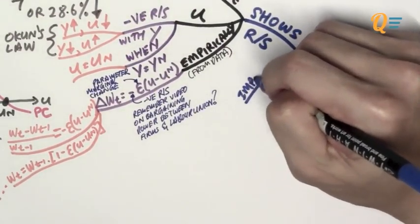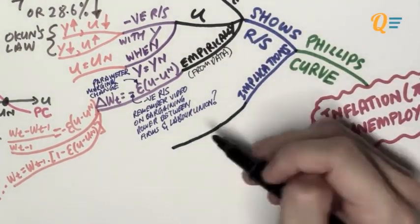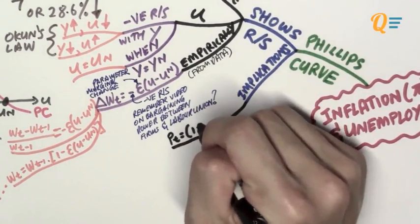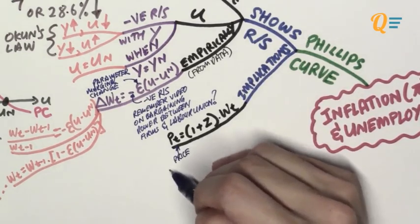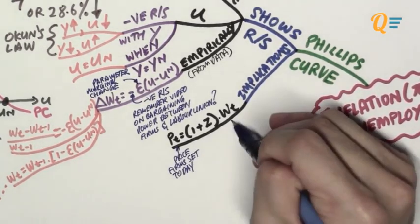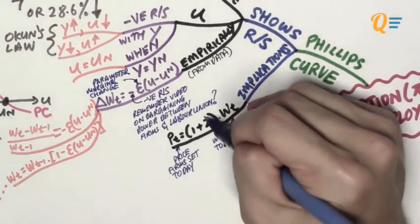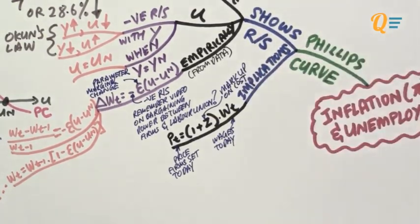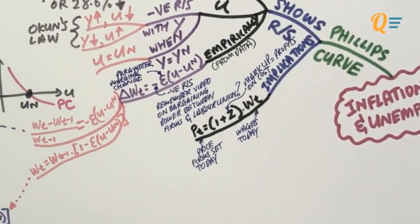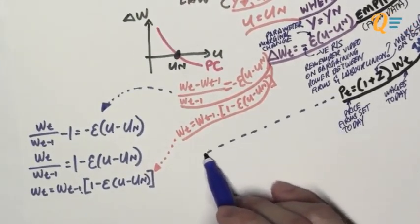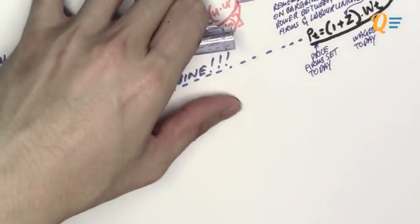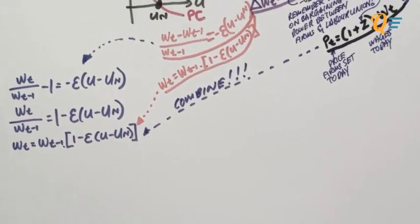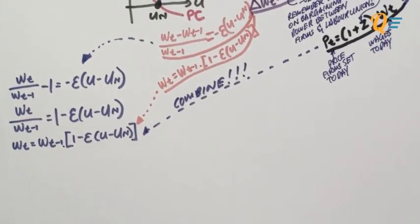Now let's talk about the implications of the Phillips curve by looking at how firms set their prices. Firms set their prices according to: Pt equals 1 plus Z multiplied by Wt, where Pt is the price firms set today, Wt is the nominal wage of today, and Z is a markup on cost — so that some firms can be making supernormal profits, because in a macroeconomy not all markets are perfectly competitive; there are monopolists, oligopolists, etc.